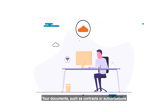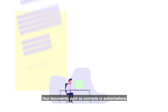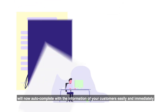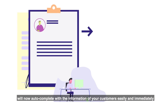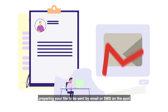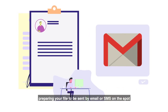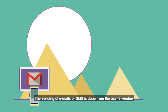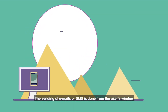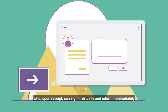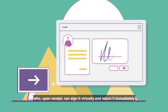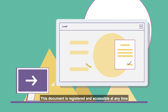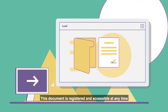Your documents, such as contracts or authorizations, will now auto-complete with the information of your customers easily and immediately, preparing your file to be sent by email or SMS on the spot. The sending of emails or SMS is done from the user's window who, upon receipt, can sign it virtually and return it immediately. This document is registered and accessible at any time.